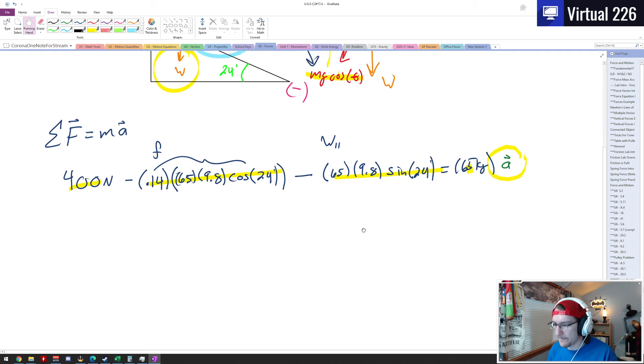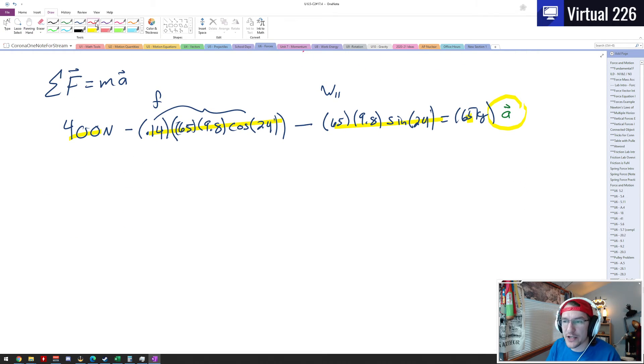So at this point we're just churning numbers. Let's do the weight parallel down the plane: 65 times 9.8 times sine of 24. When I do 65 times 9.8 times the sine of 24, I get 259.09 newtons. There's a minus there. Bring that down. And then let's look at the friction. So that is 0.14 times 65 times 9.8 times the cosine of 24.